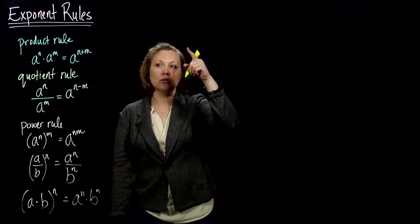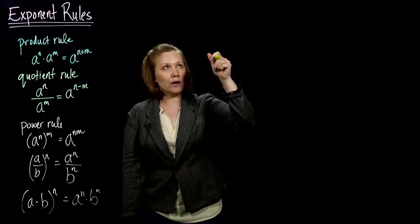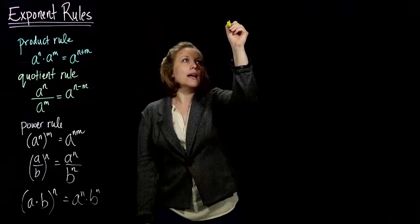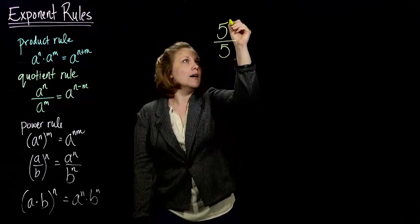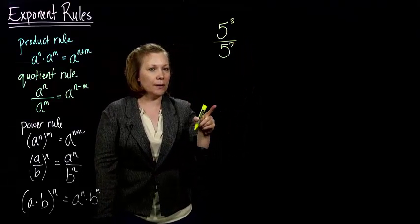So let's go back to our example that we used for the quotient rule, but we're going to flip it over. Before we had 5 to the 7th on the top and 5 to the 3rd on the bottom. But what if it was 5 to the 3rd on the top and 5 to the 7th on the bottom?